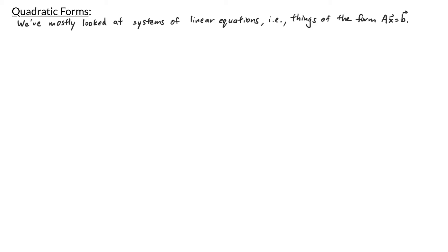In this video we're going to be talking about quadratic forms. So far, we've mostly looked at systems of linear equations — things of the form some matrix A times x equals some vector B. We call these systems of linear equations because for each of these equations, the degrees of the variables are at most 1.